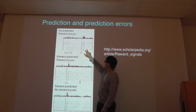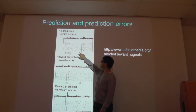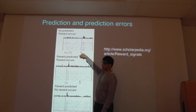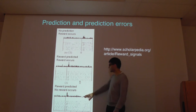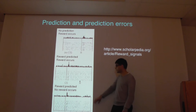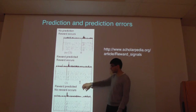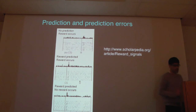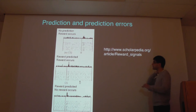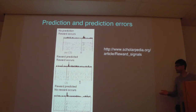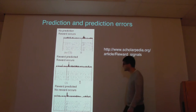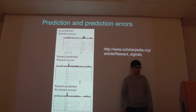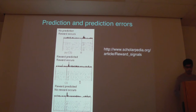What actually happens minus what you predict is something positive, because something good happens that you didn't predict. And here's the case where what actually happens minus what you predict is something negative, because you predicted something good but actually nothing happened. So prediction and prediction error are very fundamental in the brain, and a lot of people are very interested in this — they model it computationally, and you can build algorithms based on this kind of thing that do a quite good job of steering around in the world.